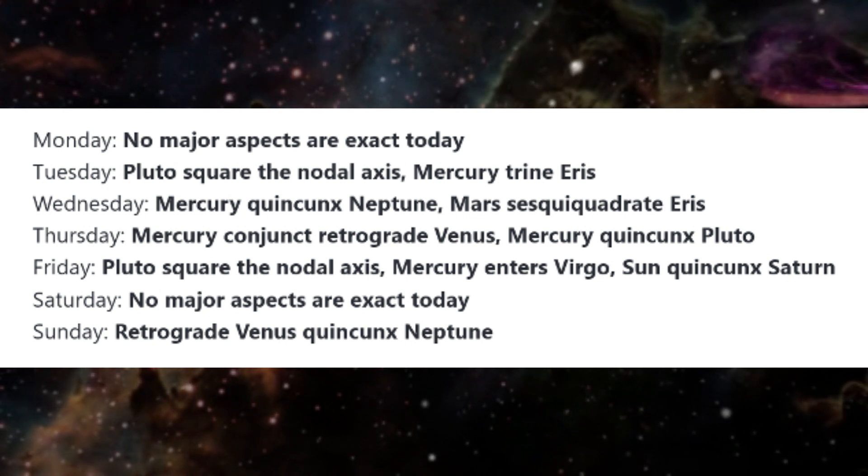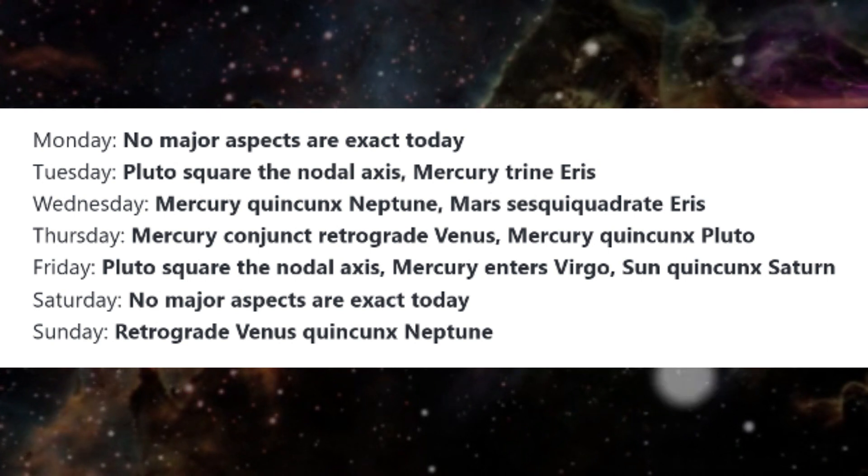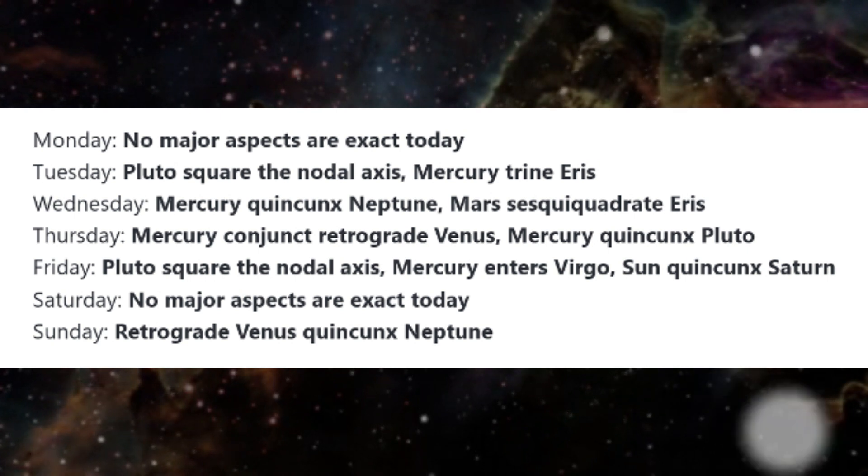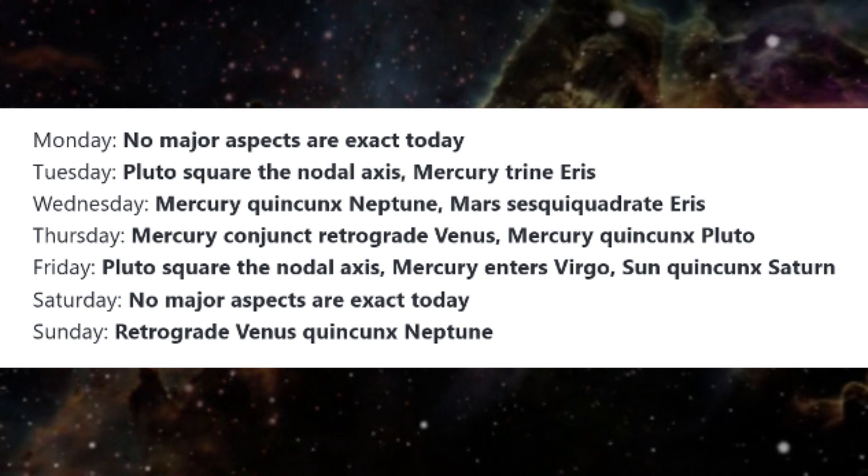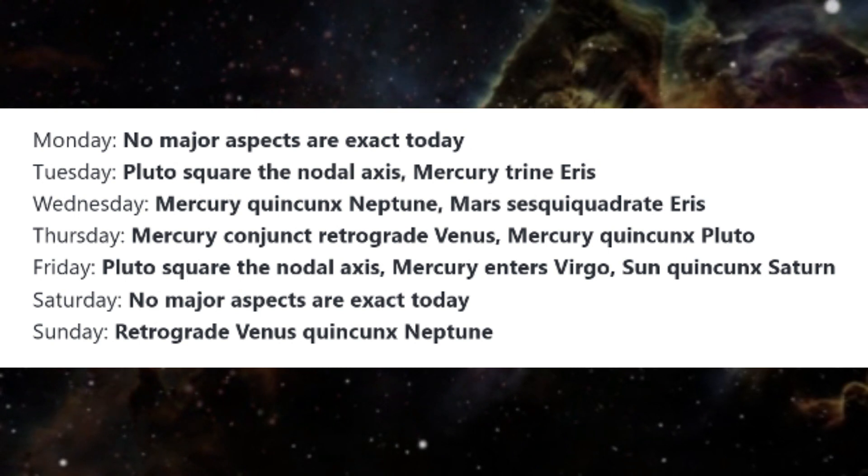On Tuesday, Pluto is square the nodal axis. Pluto is exactly square the moon's nodes three times on July 22nd, 25th, and 28th. The influence of this dynamic aspect is strong from mid-July through mid-August.